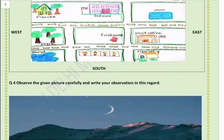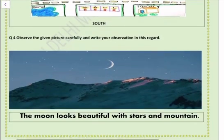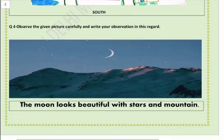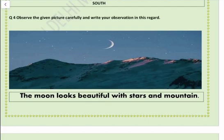Question number 4: Observe the given picture carefully and write your observation. Here we can see there is a moon, behind it there are many stars, and there is also a mountain. So we can write: the moon looks beautiful with stars and the mountain.